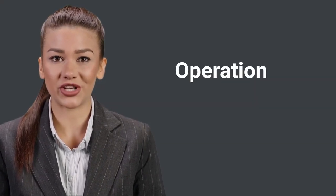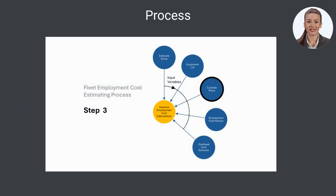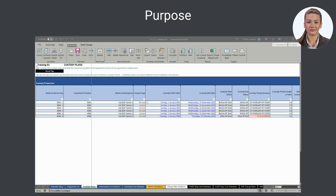Now, let's review the operation of the custody plans sheet. The custody plans sheet is used in step 3 of the process of building a fleet employment cost estimate from scratch. Each step of that process is covered in the quick start guide video available on YouTube on the Ironworks ECM channel. The purpose of the custody plans sheet is to specify the nature and timing of the custody of each machine record in the equipment list.